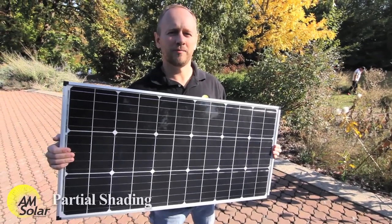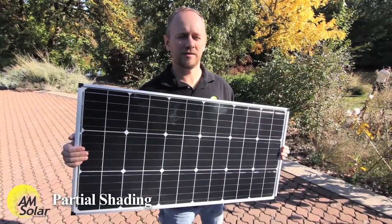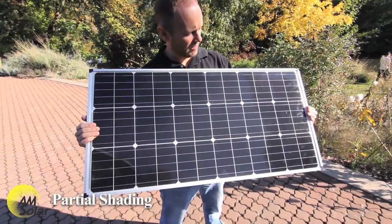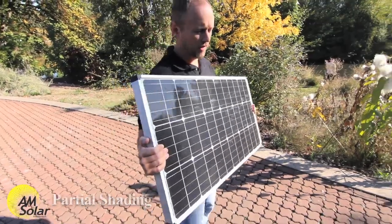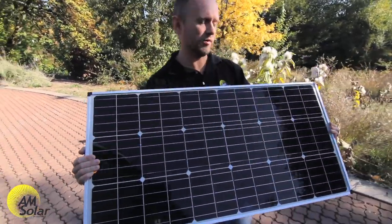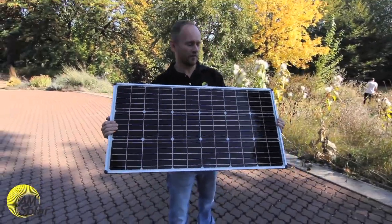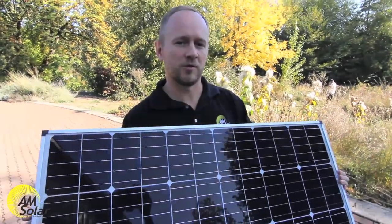The current produced by a solar panel is proportional to the amount of sunlight hitting it. So right here in the sun, I'm going to be producing pretty good current. As I walk into the shade, that current is going to drop off, but the voltage remains the same. Current is more of a function of temperature.